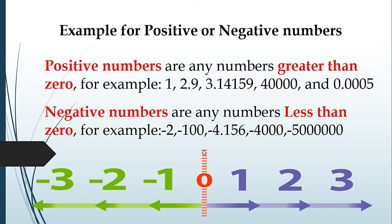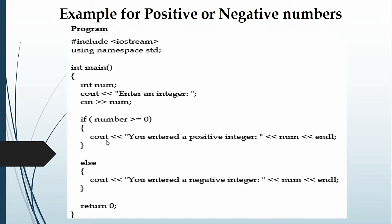So 0 stands in the middle. On this side 1, 2, 3 are called positive numbers, and minus 1, minus 2, minus 3, minus 4 are negative numbers. We are going to get a number and check it: if the number is greater than 0 it's a positive integer, if a number is less than 0 it's a negative integer.